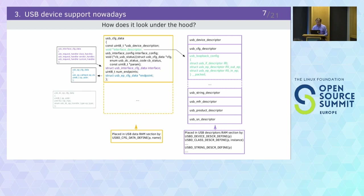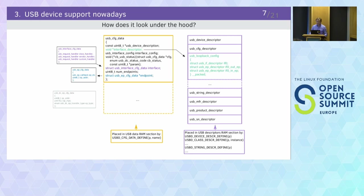Looking under the hood — if you enable USB device loopback, there are a few macros in the class code that place structures in RAM used by the device stack, like USB configuration data. Inside this structure, there is also endpoint configuration data, but part of that is redundant because this data is already available in the function descriptor. So we have this information twice. Also, at runtime, if something changes in the stack — like an alternative setting is selected — we have to update multiple different structures. That's a mess.